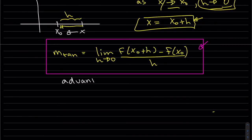An advantage of the h-form is that sometimes it's easier to factor out the h. When you have a limit of zero over zero, which is what we have here as h approaches zero, you have to factor out an h or something to resolve that indeterminate form.